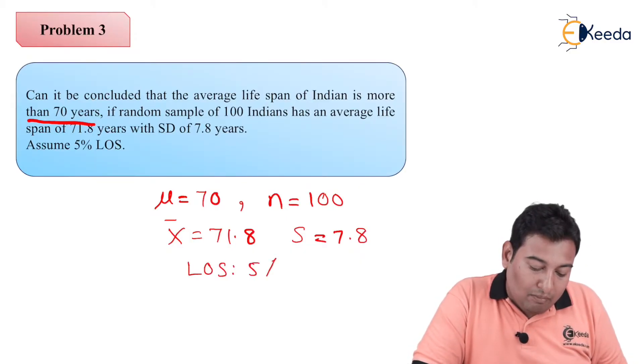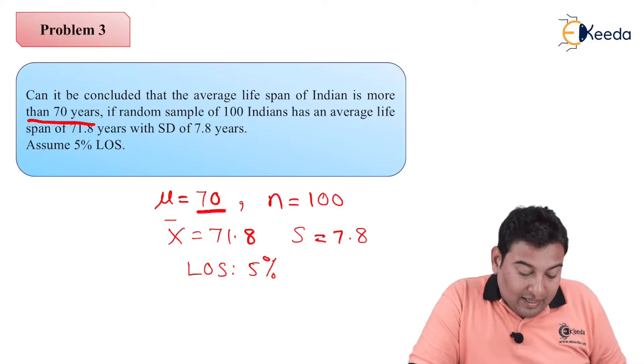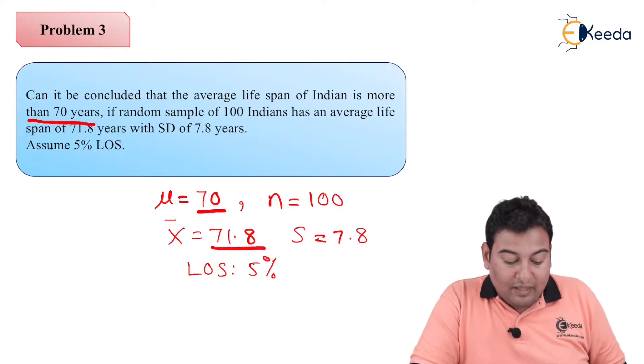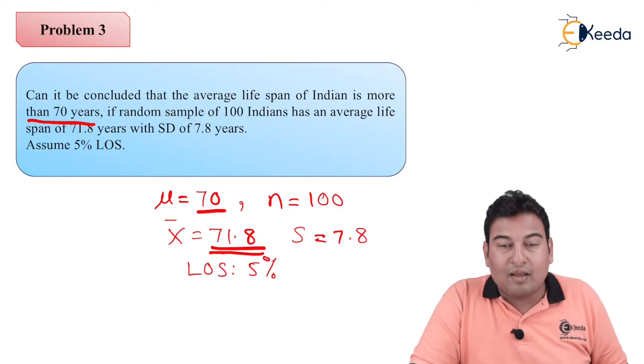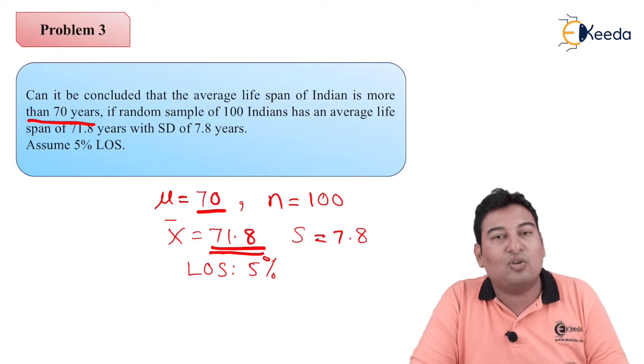LOS 5% mentioned. Now in this problem, by looking at the sample data, you can easily say that yes, the average life is more than 70 years. But yes, this data is specific to that particular sample. We need to conclude for the entire population.